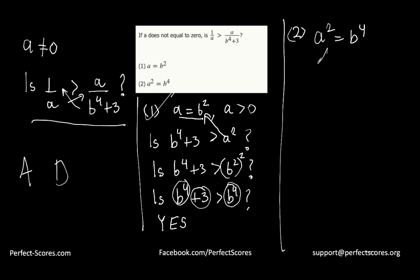Here, a can be positive as well as negative, because if a is 1 and b is 1, it's possible. If a is negative 1 and b is 1, it's still possible because negative 1 squared equals 1 to the power 4. Clearly a can be positive and a can be negative.